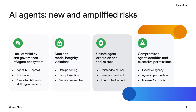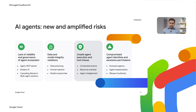The third risk category is unsafe agent execution and tool misuse. These include autonomous agents performing unintended actions or being manipulated to misuse integrated tools, leading to operational disruptions, system compromise, or safety incidents. Mitigating that requires a multi-layered defense-in-depth approach covering safe agent execution, integration into infrastructure security, controls for agent-tool interactions, runtime policy enforcement, and operational code integrity.